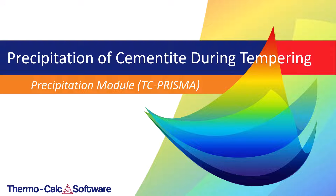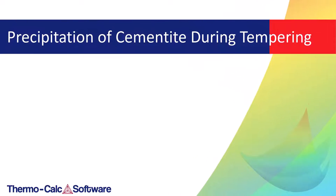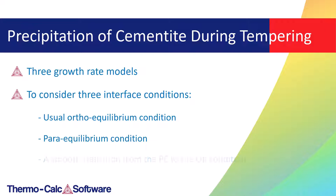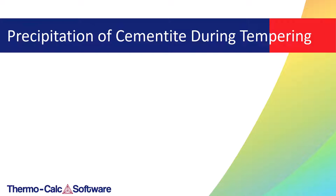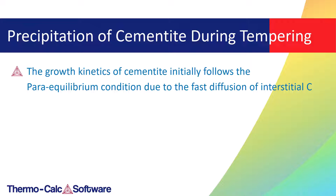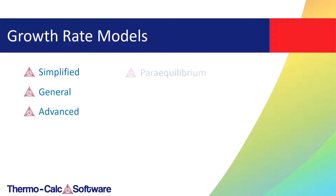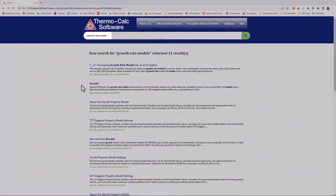In this video, we will simulate the precipitation of cementite during tempering of an iron, manganese, carbon steel. We'll use three growth rate models from the precipitation module to consider three interface conditions: the usual ortho-equilibrium condition, the para-equilibrium condition, and a smooth transition from para-equilibrium to ortho-equilibrium. We consider all three conditions because the growth kinetics of cementite initially follows para-equilibrium due to fast diffusion of interstitial carbon, and gradually transforms to the regular local equilibrium condition — ortho-equilibrium — so substitutional elements can reach equilibrium partitioning at the migrating interface. You can learn more about all of the growth rate models in the precipitation module in the online help by searching for growth rate models.